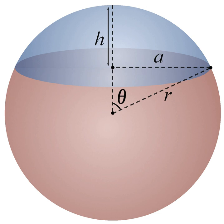Circular segment, the analogous 2D object. Solid angle, contains formula for N-sphere caps. Spherical segment. Spherical sector. Spherical wedge.